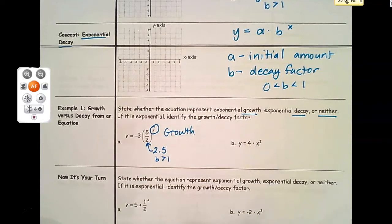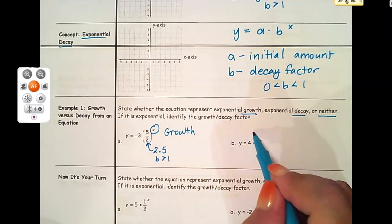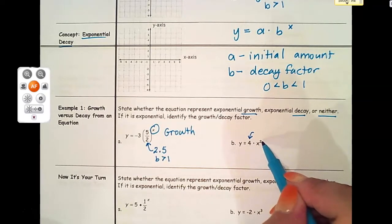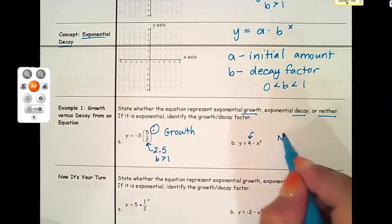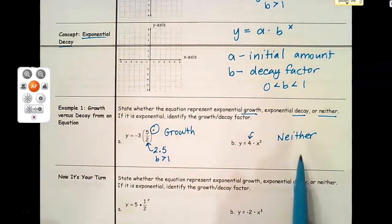In letter b, I see what looks like an a value, but my x is a base for an exponent and my exponent is just 2. I've got an x squared equation - this is not an exponential, so I would say it's neither.